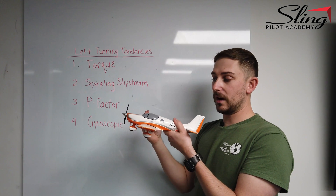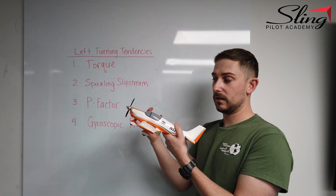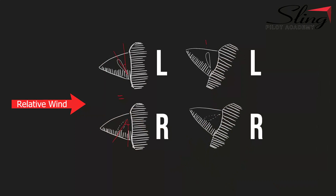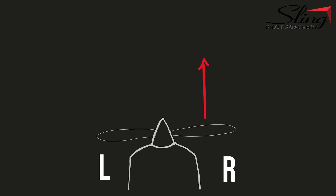But when you change your angle of attack relative to the wind coming toward the aircraft, the right side has a much larger angle of attack. This creates more lift on the right side of the propeller, causing the plane to yaw to the left.